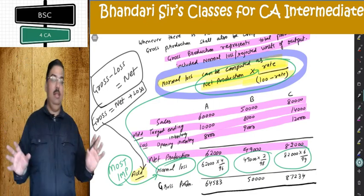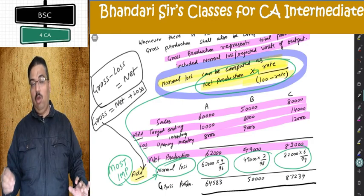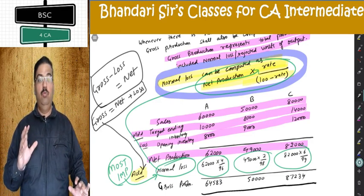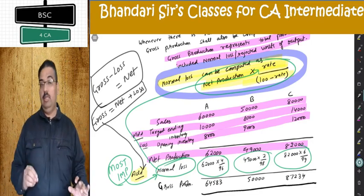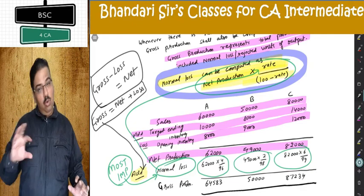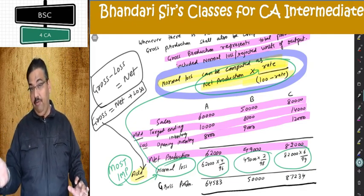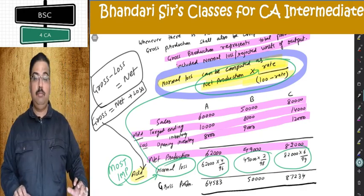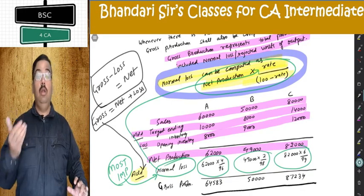What exactly is normal loss in much more detail you will get in the chapter of process costing. We have done two different concepts in the last two questions: in B5 we got the concept of capacity utilization; in B6 we have got the concept of normal loss.